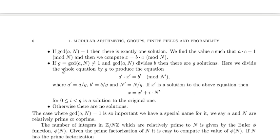If g equals the GCD of a and n is not equal to 1, and the GCD of a and n divides b, then there are g solutions, where g is the greatest common divisor of a and n.